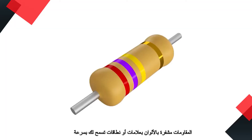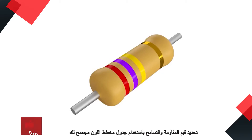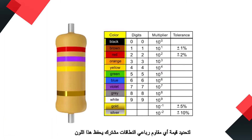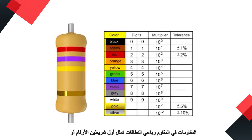Resistors are color-coded with markings or bands that allow you to quickly identify resistance values and tolerance. Using a color chart table will allow you to determine the value of any common four-band resistor. Memorizing this color chart will enable you to become proficient at quickly decoding and using resistors.